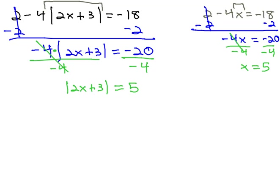Once the absolute value is alone, we can now say that this stuff inside the absolute value can equal our two possible results. The 2x plus 3 could equal positive 5, or the 2x plus 3 could equal negative 5. When we remove the absolute value, we consider both the positive and negative results.